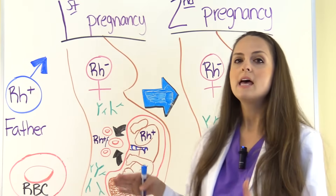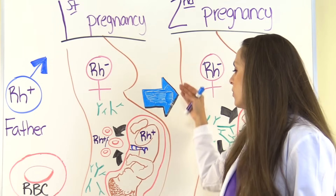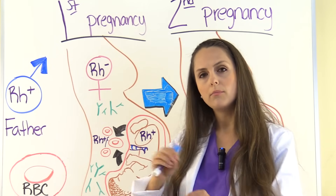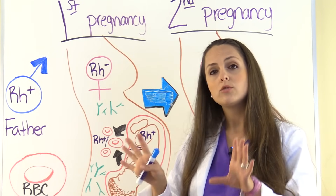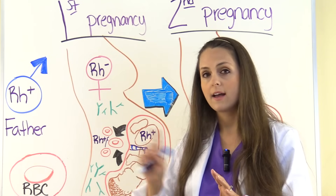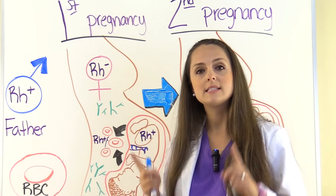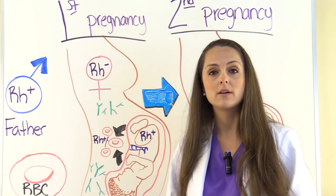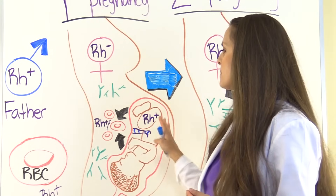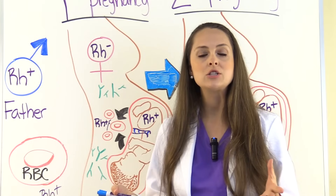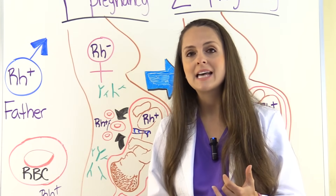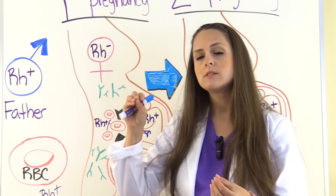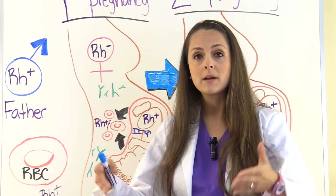Typically in the first pregnancy, the baby is not affected, because these antibodies are created once that baby is delivered. When that placenta comes off of the wall, the blood from the baby will go into mama's circulation. The body will see that RH positive blood and say that's a foreign invader, and creates these antibodies. Baby's gone by the time these antibodies are really formed and ready to attack. However, sometimes this can happen early on where baby's blood enters into mom's circulation — like with trauma, like abruptio placentae, where some of that placenta has come off the uterine wall either partially or totally, baby's blood goes into mom's circulation, antibodies are created, baby's still in there, and those antibodies can attack.